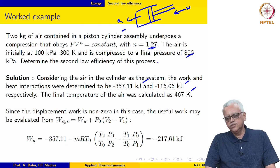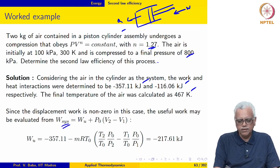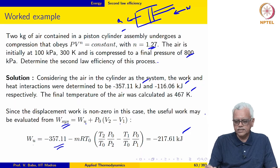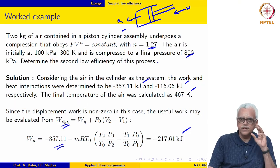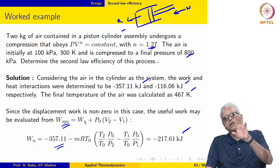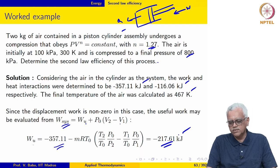Notice that this is a non-flow situation and the displacement work is non-zero. So the useful work may be evaluated as W_sys equal to W_u plus P0 times (V2 minus V1), from which we may evaluate the useful work as minus 217.61 kilojoules. So it is not minus 357.11 kilojoules — minus 357.11 kilojoules is the net work interaction for the system, which is the sum of the useful work plus the work done to displace the atmosphere. So the useful work is only minus 217.61 out of the minus 357.11 kilojoules.